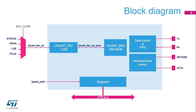The LPUART clock source is divided by a programmable factor in the LPUART PSC register, in range 1 to 256. TX and RX pins are used for data transmission and reception. NCTS and NRTS pins are used for RS-232 hardware flow control. The driver-enable pin, or DE, which is available on the same I/O as NRTS, is used in RS-485 mode.